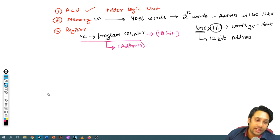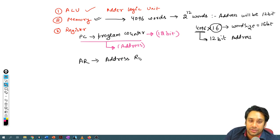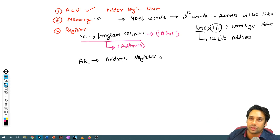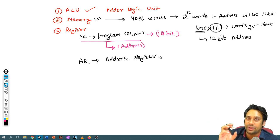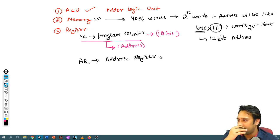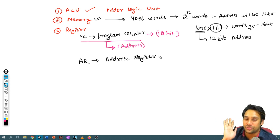The second register we need is the AR — the Address Register, also called the Memory Address Register (MAR). When the CPU needs to access data from main memory, the address is placed in the Address Register.